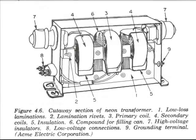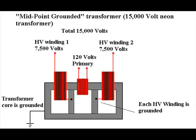In a midpoint grounded transformer, the secondary winding is actually made up of two windings, with a point in the middle being connected to the transformer's core and then grounded. Most neon transformers are designed this way. The transformer's output voltage is split in half, with the center tap being at zero volts. For example, a 15,000 volt neon transformer will have two live terminals with 7,500 volts and a center tap at zero volts. From each terminal to the center tap, there will be 7,500 volts; across both terminals, there will be a total of 15,000 volts. One reason for designing a transformer this way is that it reduces some of the stress on the insulation — each side only has to be insulated for 7,500 volts.